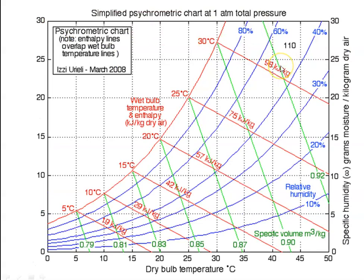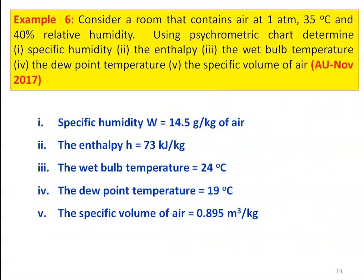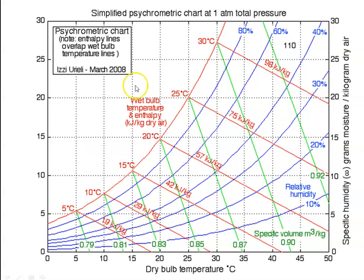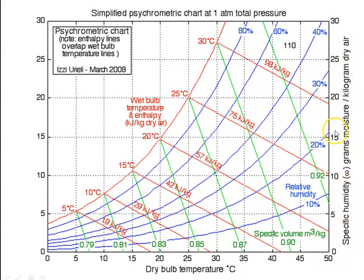This is the psychrometric chart. The given condition is 35 degree Celsius and 40 percent relative humidity. The X axis is dry bulb temperature in degree Celsius, starting from 0 degree Celsius to 50 degree Celsius. The Y axis is specific humidity in grams per kg of dry air — 0, 5 grams, 10 grams, 15 grams, 20 grams, 25 grams and 30 grams.